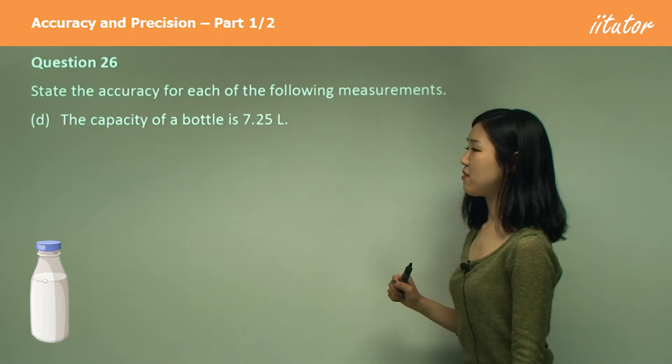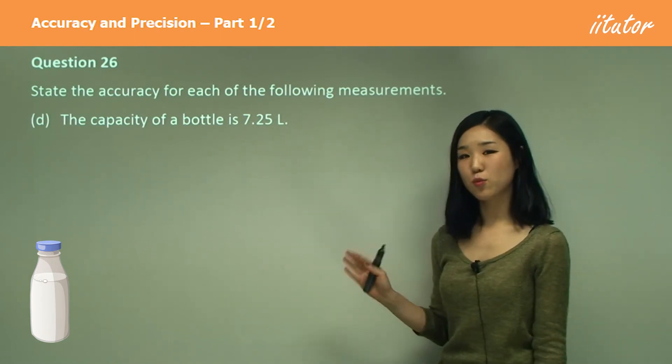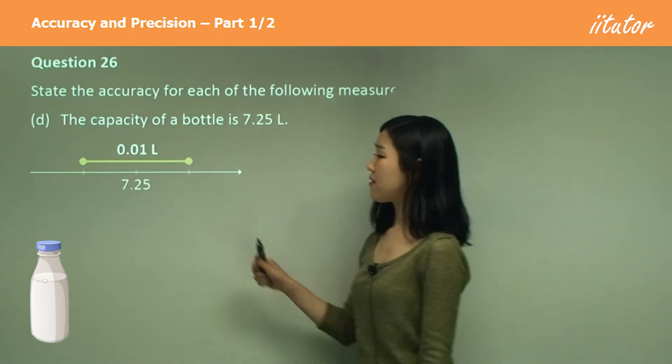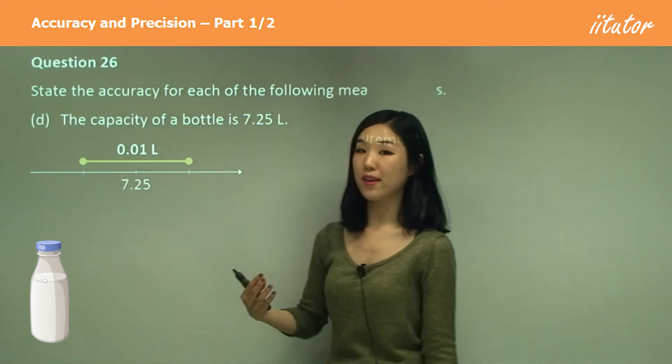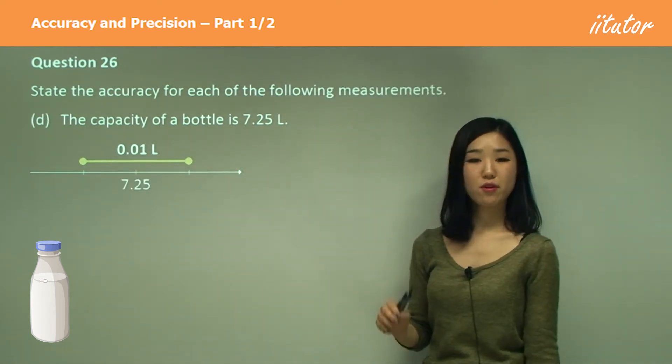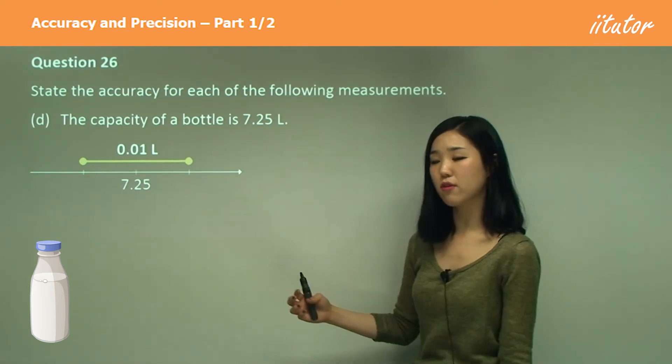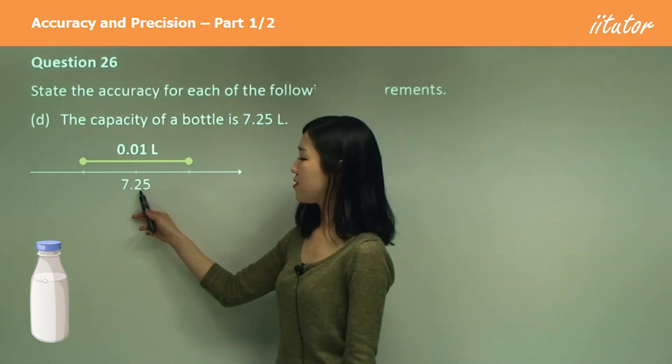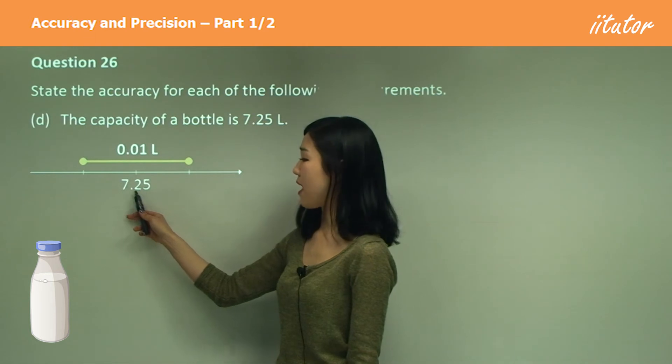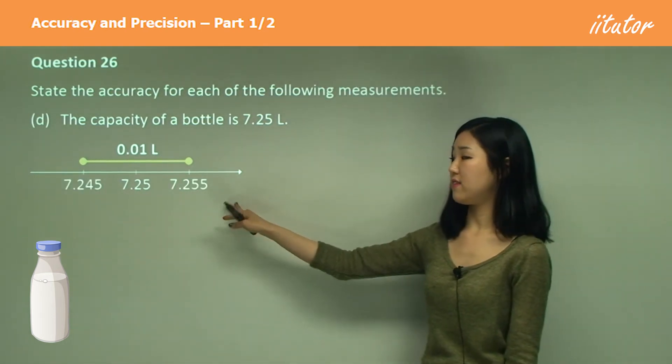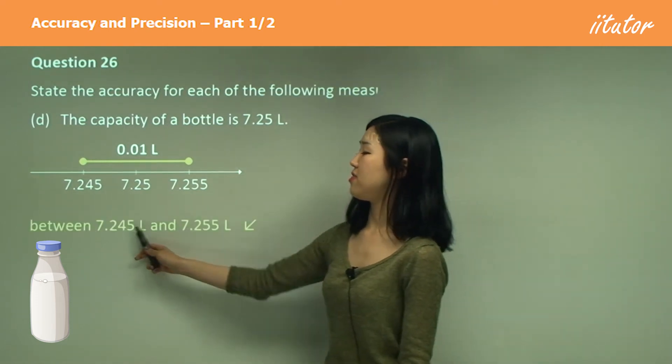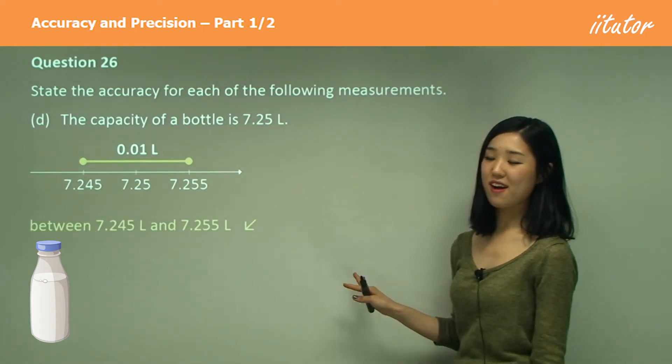Capacity of a bottle is 7.25 liters. So this is what I mean. 7.25 liters is to the nearest hundredth. So it's going to be 0.01. So what's half of 0.01? 0.005. So you subtract 0.005 from there, we get this, and we add 0.005 here to get that. So the accuracy is between these two values. That's all you need to write.